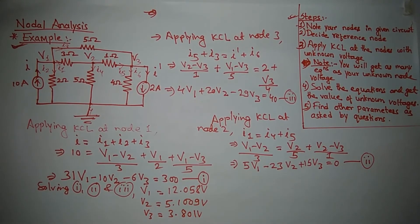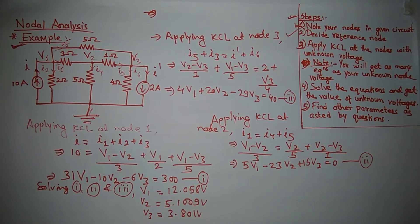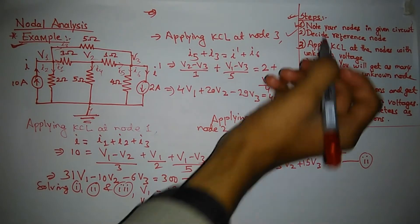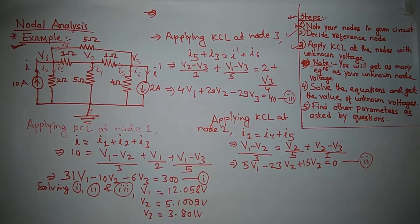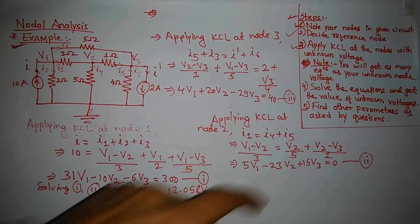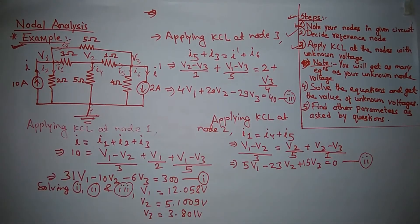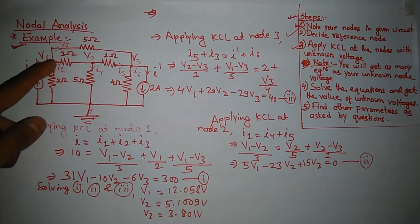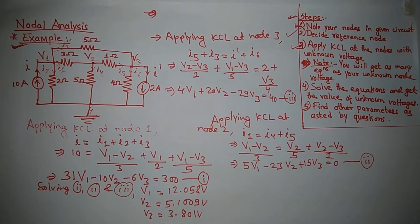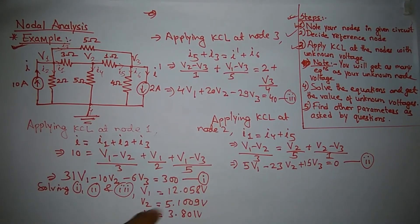So we have completed up to step number 4. We noted our nodes, we decided reference node, we applied KCL at nodes with unknown voltages. And as I have mentioned here, I got 3 equations since I have 3 unknown node voltages. And I solved the equations and got the value of V1, V2, and V3.